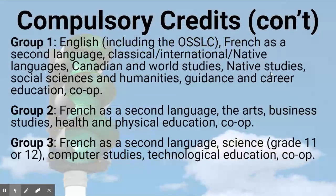Group one falls in the category of English, French, social sciences, and co-op. Group two falls into the category of French, business, arts, health and physical education, and co-op. Group three falls under French, science, computer studies, technology, and co-op. In order for you to graduate, you'll need to complete a course that falls under each one of these categories.